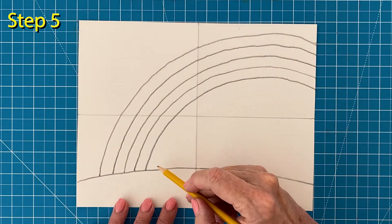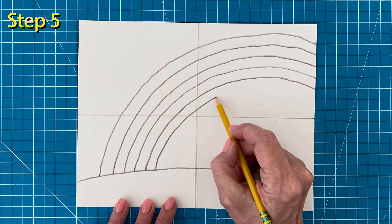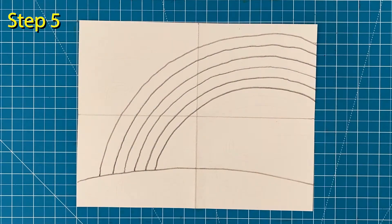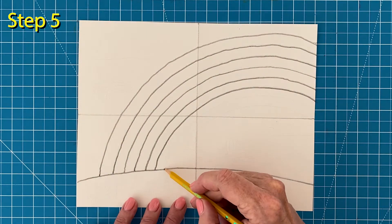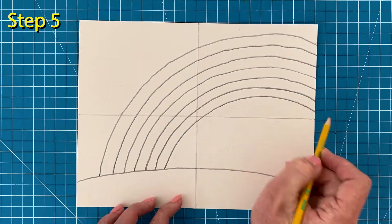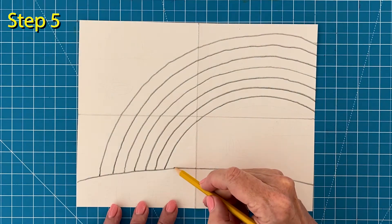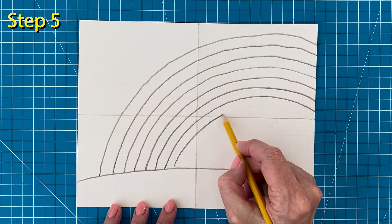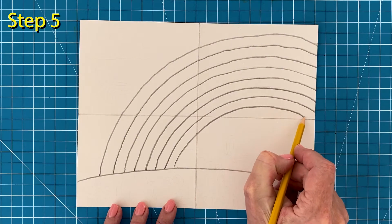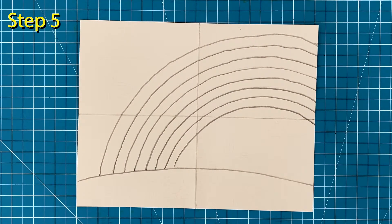Step number five, add a sixth curve still trying to make them all as even as possible. And then a seventh curve below the sixth. Finally, an eighth curve below finishes off the rainbow. Don't worry if the stripes are not perfect, a hand-drawn rainbow is what we are going for here.